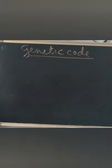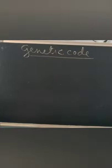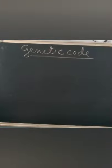Today our topic of discussion is genetic code. Genetic code is the relationship between the sequence of nucleotides of mRNA and the sequence of amino acids in the polypeptide.